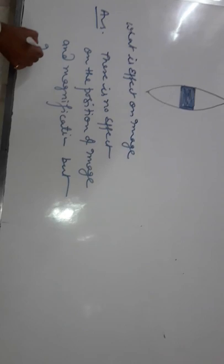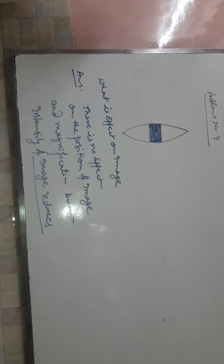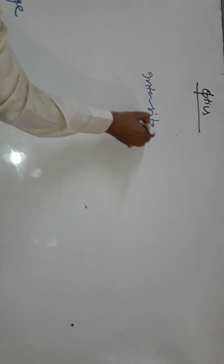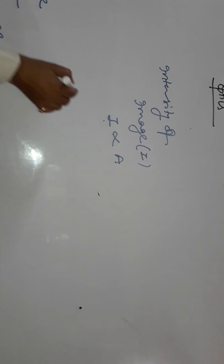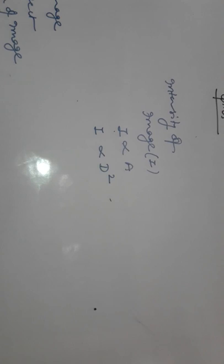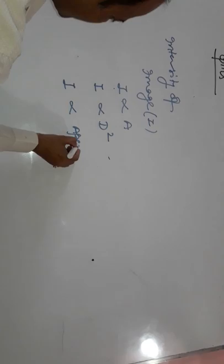But intensity of image reduces. If you cover partially a lens, then intensity of image, that is brightness of image, decreases. Intensity of image is directly proportional to area of lens, that is diameter of lens. That is aperture, diameter is aperture of lens. If aperture decreases, then intensity decreases. Thank you.